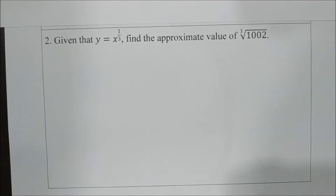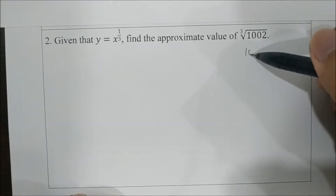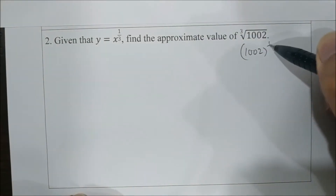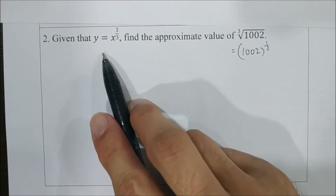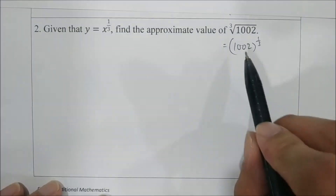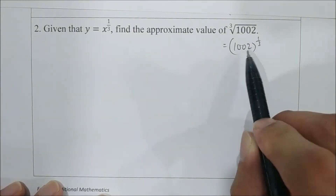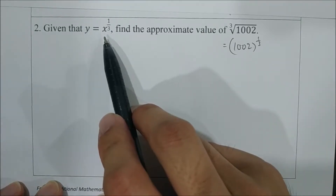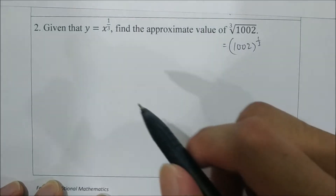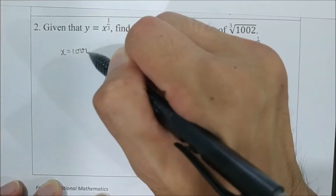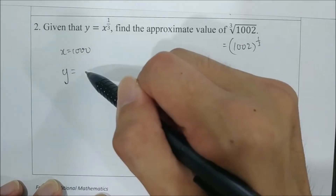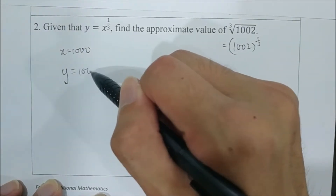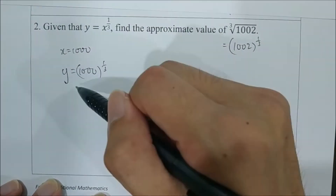Given that y equals x to the power of 1 over 3, find the approximate value of the cube root of 1002. Rewriting, this is 1002 to the power of 1 over 3. Since we are given 1002, we know that when x equals 1000, it is easy to find the cube root of 1000. Taking x as 1000, y becomes 1000 to the power of 1 over 3, which is 10.